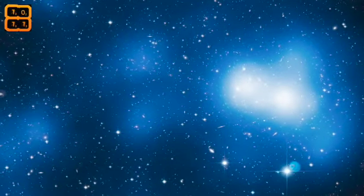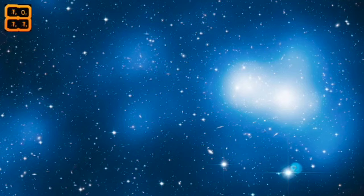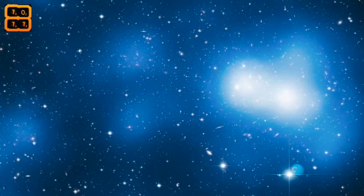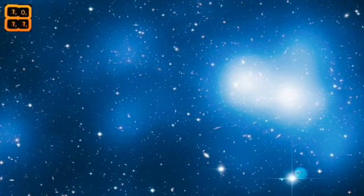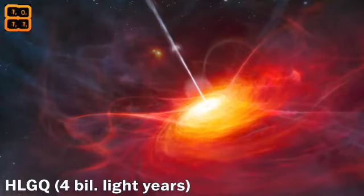Discovered in 2013, the Great GRB Wall is a massive superstructure of gas, dust, and dark matter containing billions of galaxies, and more than twice the size of the previous largest known object, the huge large quasar group.